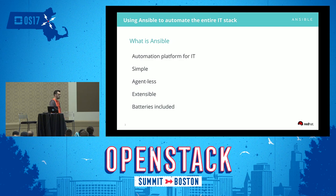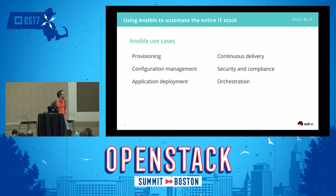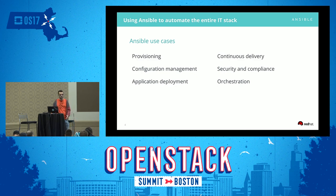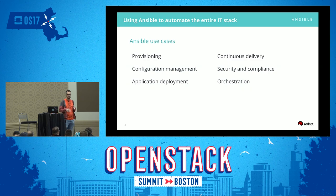Ansible has lots of modules for doing all sorts of tasks: config management, provisioning, everything. Use cases include provisioning — whether you want to provision physical servers or cloud resources. A lot of people just think about Ansible for config management, but Ansible can do a lot of other things: application deployment, continuous delivery, security and compliance. Overall, Ansible is a great orchestration tool — you tell a machine what you want to do.